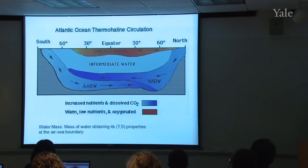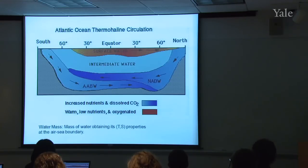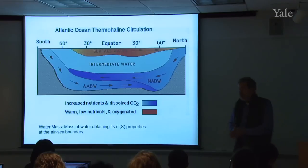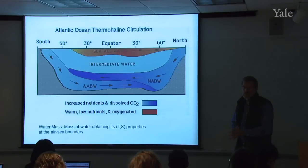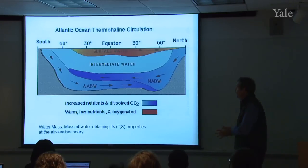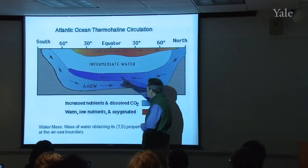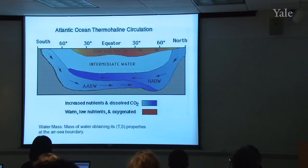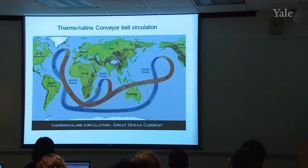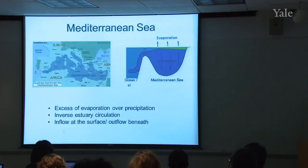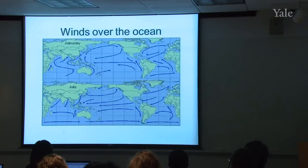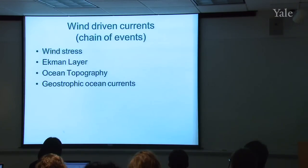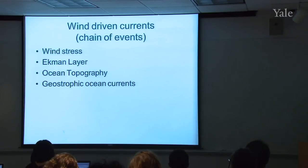We talked about oxygen distributions and this summary of the north-south Atlantic thermohaline circulation. The key water masses are the Antarctic Intermediate Water, the North Atlantic Deep Water, and the Antarctic Bottom Water. Now I'll get into wind-driven currents. The chain of events, as we understand it today, is that wind stress produces a shallow transport of water in the layer that directly feels that stress.